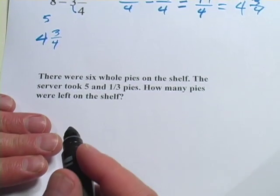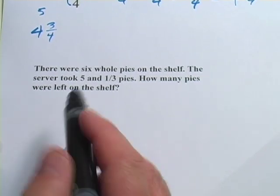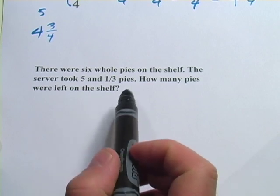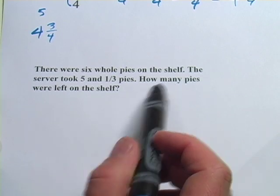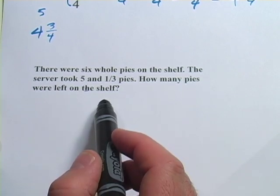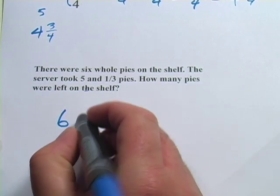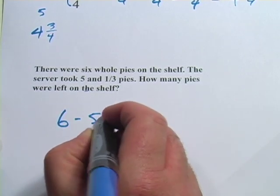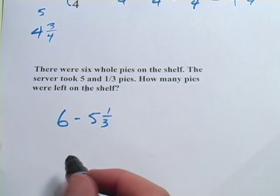Let's do another one — a word problem. It says there were 6 whole pies on the shelf. The server took 5 and 1 third pies. So that sounds like you had 6 and you subtracted 5 and 1 third. How many pies were left on the shelf?